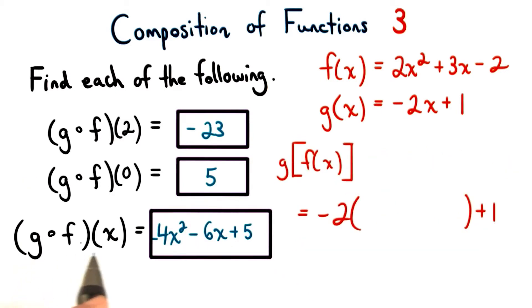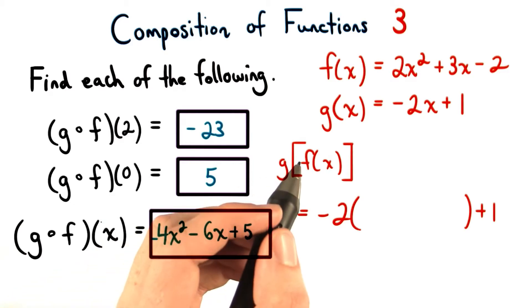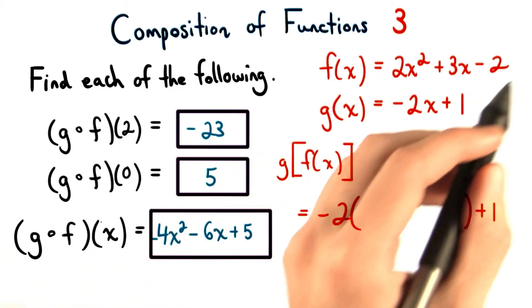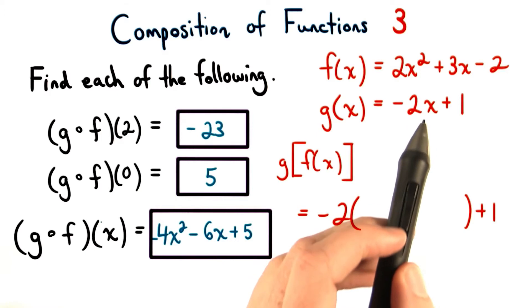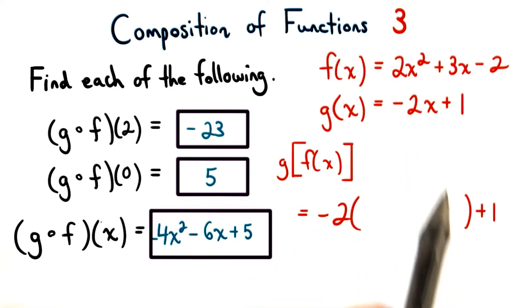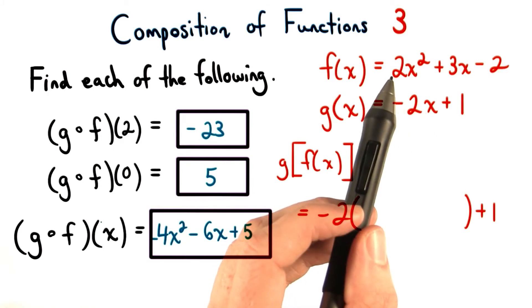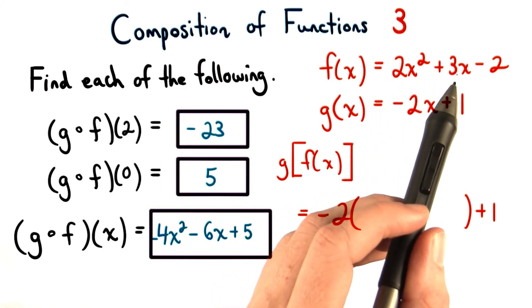And finally, for g of f of x, we simply take the entire function f of x, and we plug it in as the input for g of x. So wherever we see x, we'll replace that with 2x squared plus 3x minus 2.